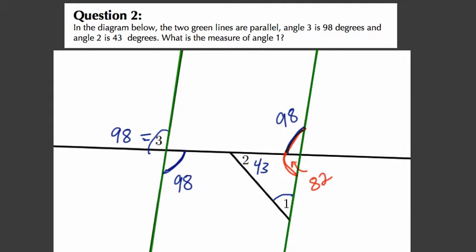What's left is a triangle. In this triangle we have a 43 degree angle, an 82 degree angle, and we need to find what's left. So 43 degrees plus 82 is what?